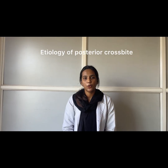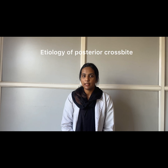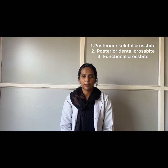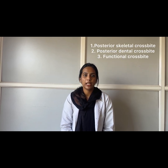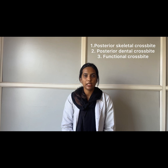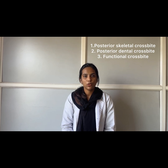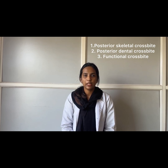Etiology of Posterior Crossbite. Posterior Skeletal Crossbite is the result of a lateral discrepancy between the upper and lower teeth as a result of discrepancy between the apical base foundations. It is usually bilateral in origin, but may also appear as a unilateral posterior crossbite.